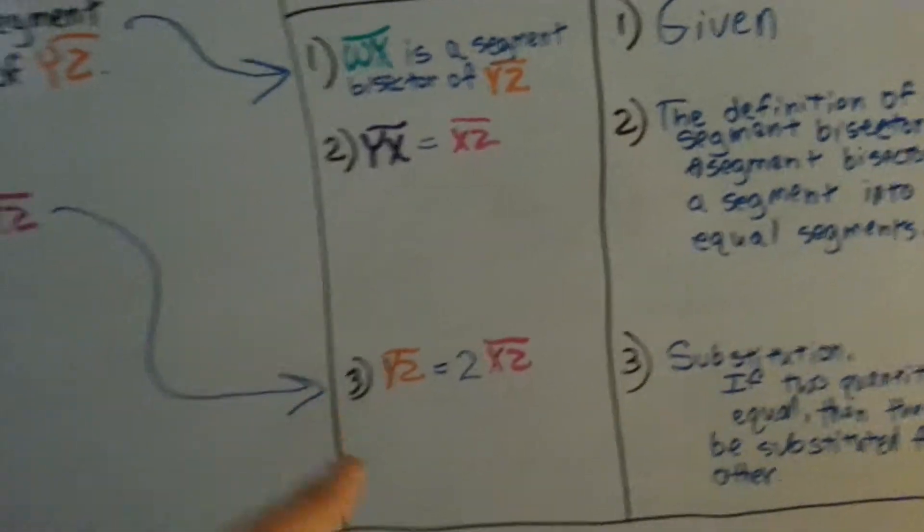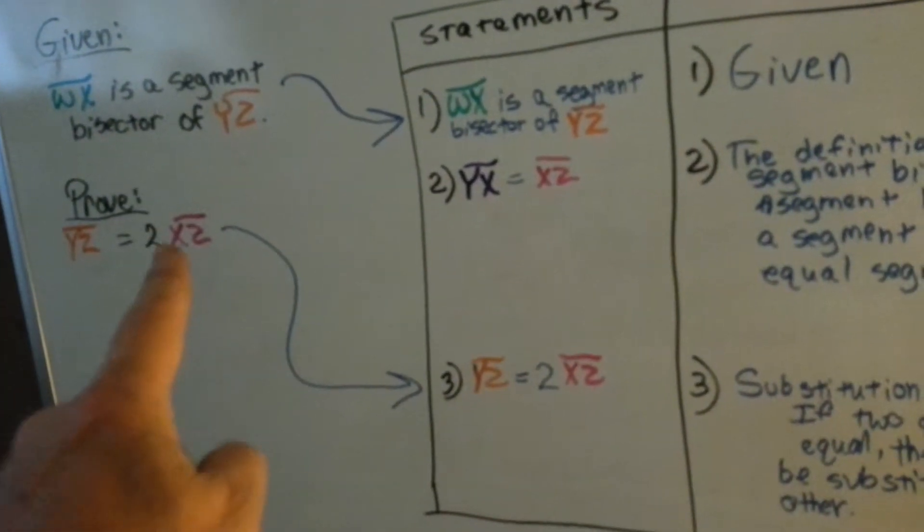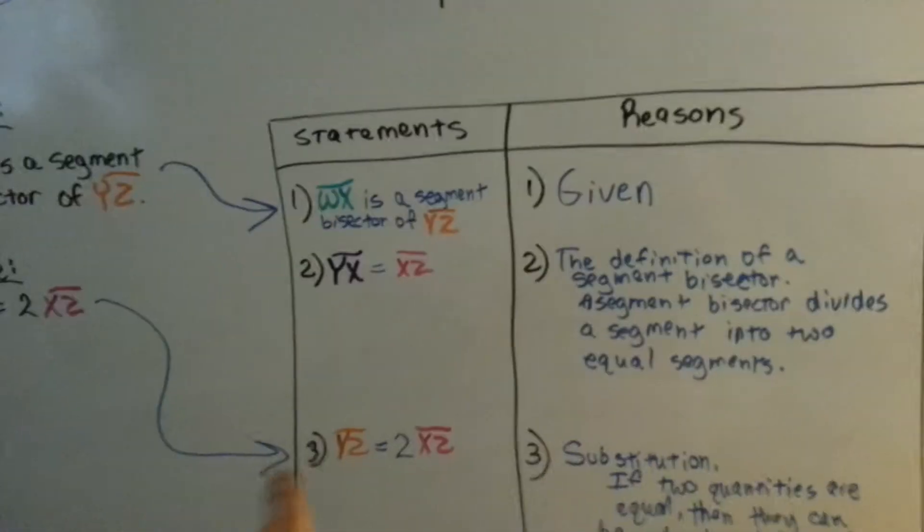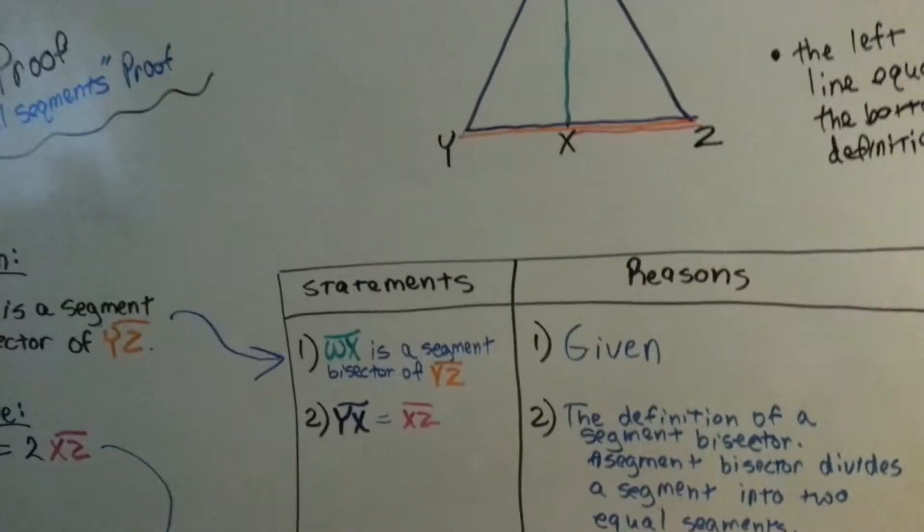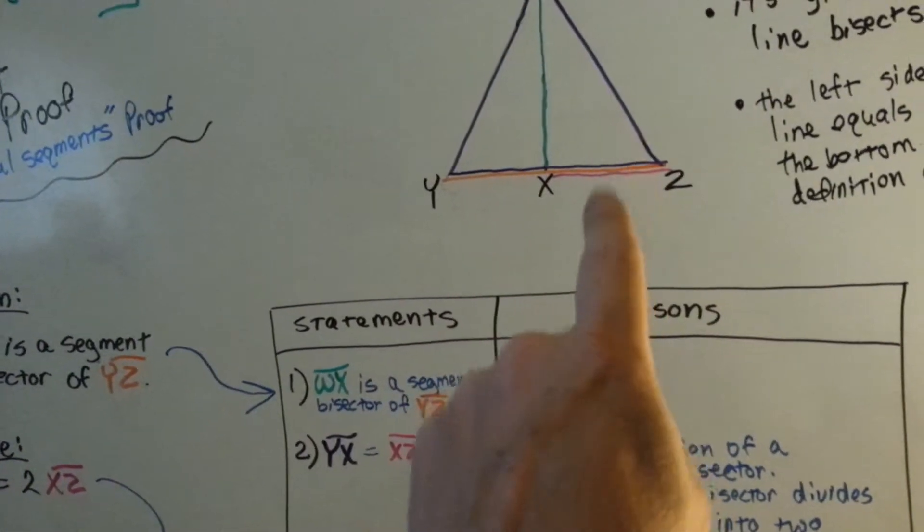This is equal to this because of the definition of a segment bisector. Therefore, yz is equal to 2xz. This entire thing is equal to this times 2.